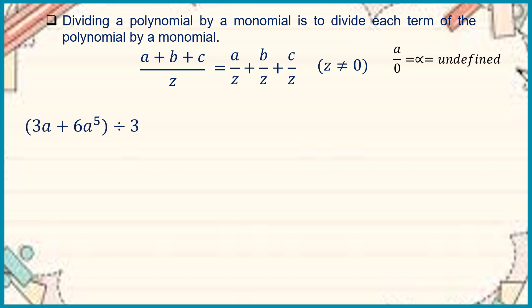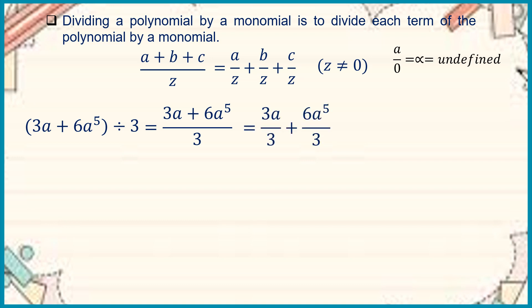Let us have the first one: the quantity 3a plus 6a squared divided by 3. We rewrite and divide each term by 3. So we have 3a divided by 3 plus 6a squared over 3. Simplifying, 3a over 3 becomes a, and 6a squared over 3 becomes 2a squared. So the answer is a plus 2a squared.